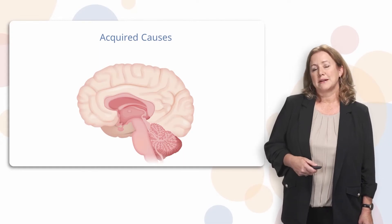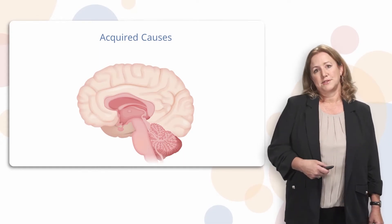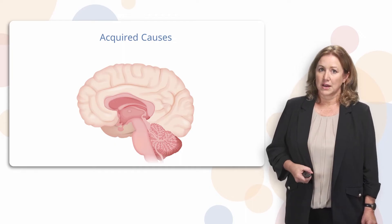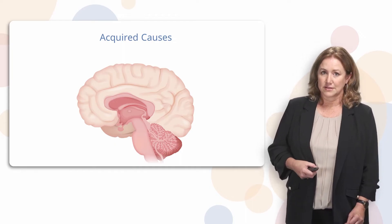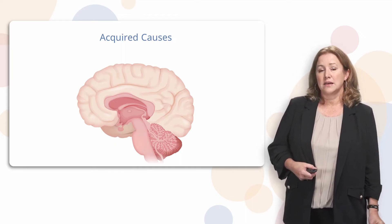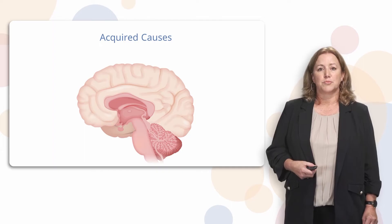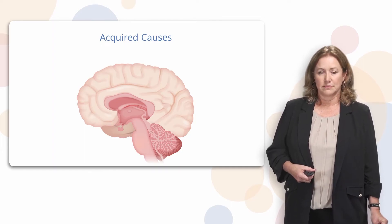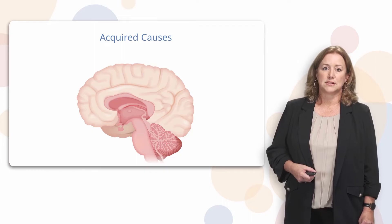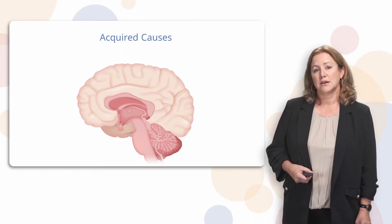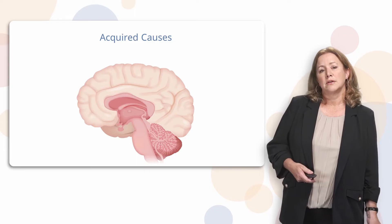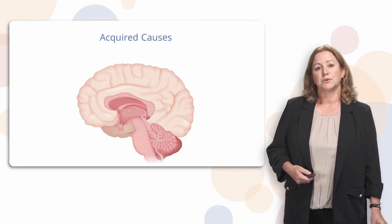Congenital syphilis can cause congenital hydrocephalus because it can cause irritation and inflammation of the fetal brain. Let's talk about some acquired causes for hydrocephalus. This is fairly intuitive because basically it's anything that can cause pressure, bleeding, injury, or infection to the brain. The brain just does not have a lot of tolerance for abnormalities, and when they occur, more pressure can build up and more fluid can build up or get blocked.